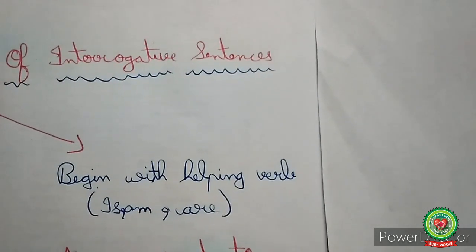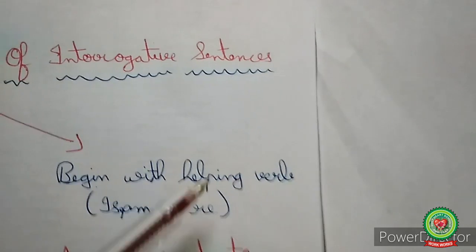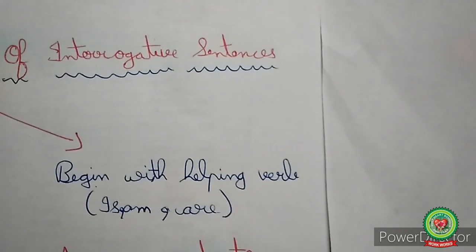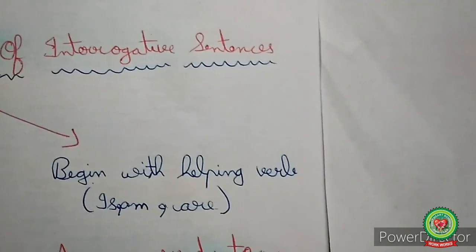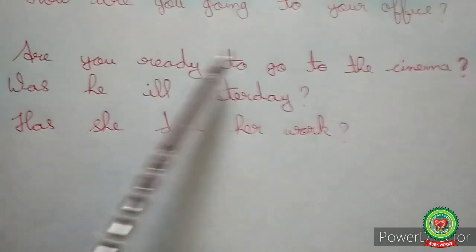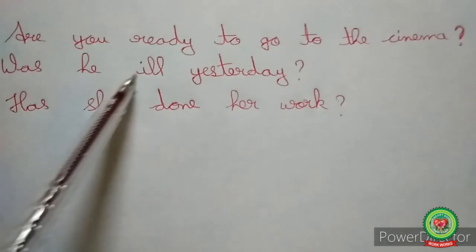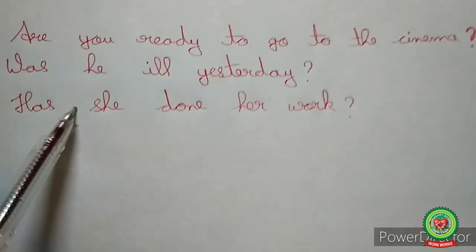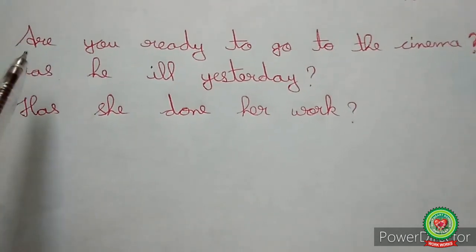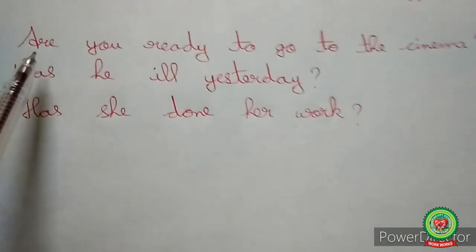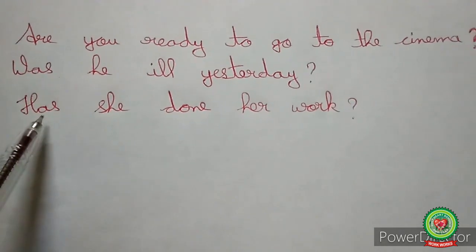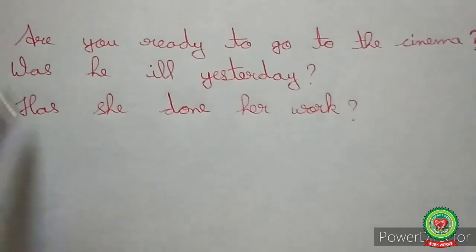The other type of interrogative sentences begin with helping verbs — verbs like is, am, are, was, were, will, shall, and others. For example: 'Are you ready to go to cinema?', 'Was he ill yesterday?', 'Has she done her work?' In these sentences all of them begin with helping verbs: are in the first sentence, was in the second sentence, has in the third sentence.